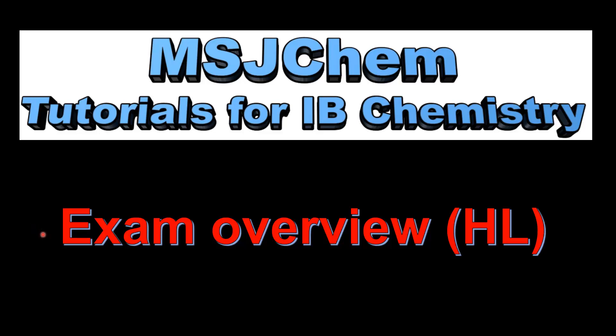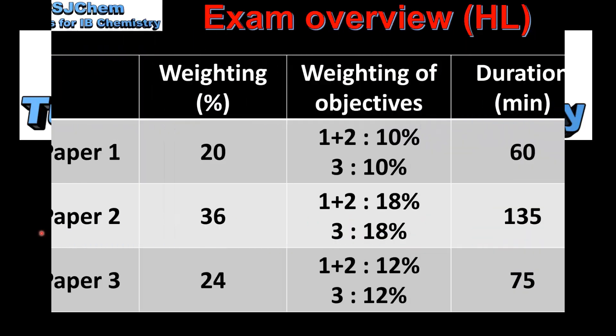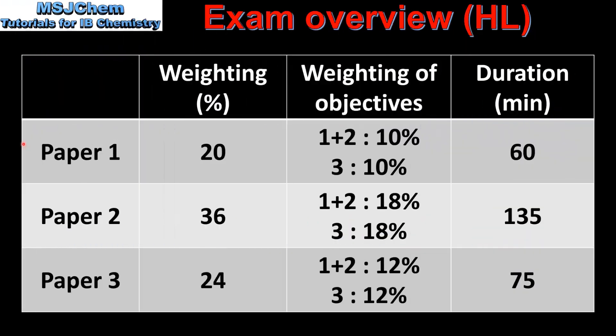This is MSJChem. In this video I'll be looking at an exam overview for the higher level. The IB Chemistry exam is made up of 3 papers: paper 1, paper 2 and paper 3.